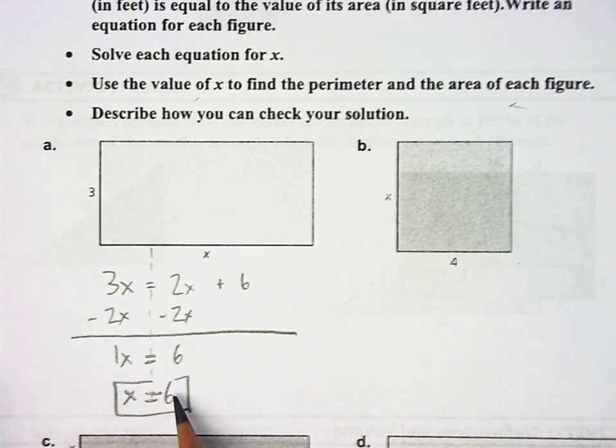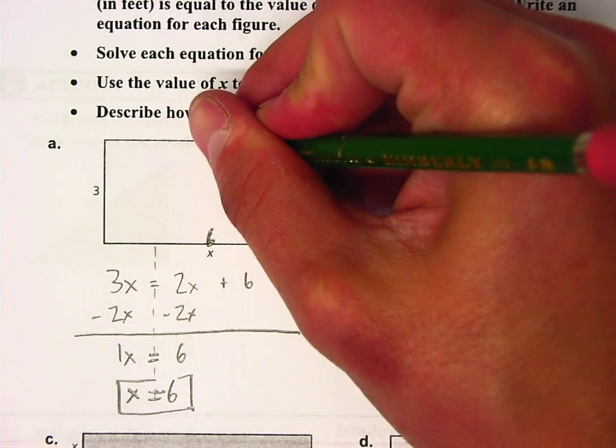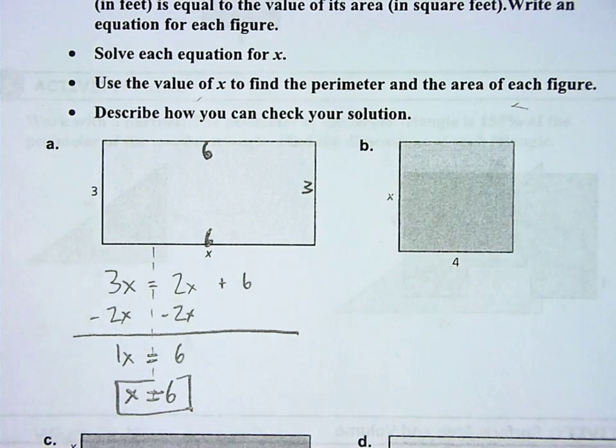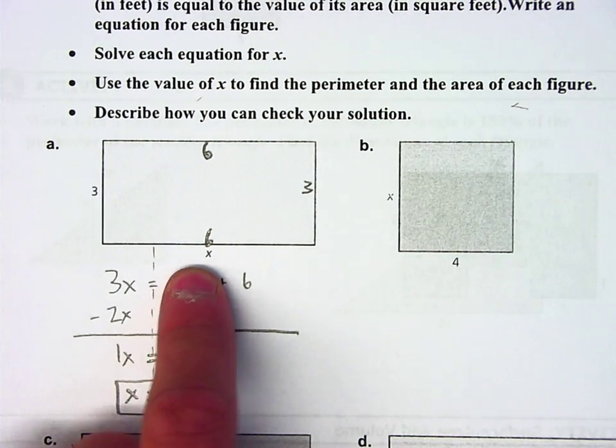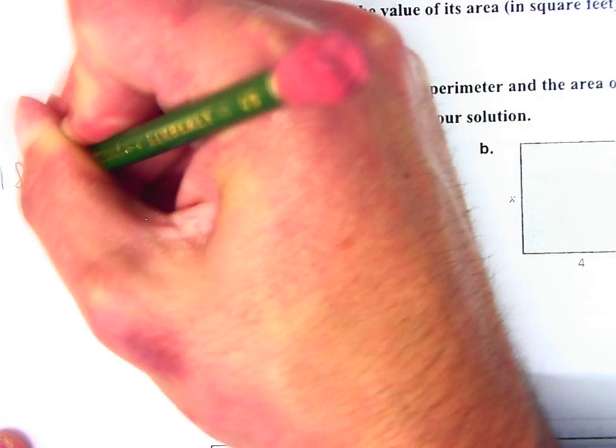If I think the x is 6, why don't I come up here and write that in there? 6. And up here, I know this side would also be 6, and I know over here, this side is 3. So what's the perimeter? Well, 3 plus 6 plus 3 plus 6, you add that up, and you get 18. There's my perimeter.